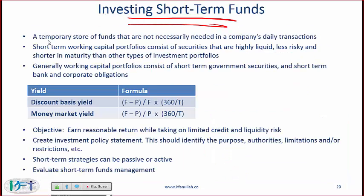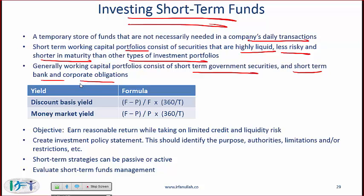Short-term funds are a temporary store of funds not necessarily needed in a company's daily transactions. Short-term working capital portfolios consist of securities that are highly liquid, less risky, and of shorter maturity than other types of investment portfolio. You would typically invest in T-bills — three-month or six-month T-bills. The extra cash a company has that it does not expect to need daily might be invested in liquid, safe, short-term instruments such as T-bills. Generally, working capital portfolios consist of short-term government securities and short-term bank and corporate obligations.